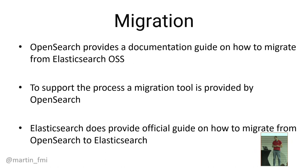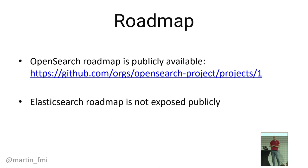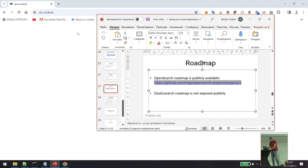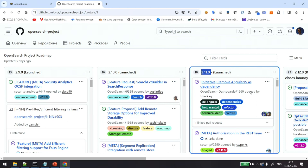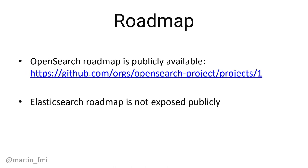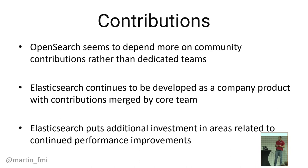In terms of roadmap, the Elasticsearch roadmap is not publicly available — they announce new features through blog posts and YouTube sessions. In OpenSearch, the roadmap is publicly available on GitHub, so you can see what is planned for upcoming versions like 2.10.0, 2.11, and so on. In terms of contributions, OpenSearch depends more on community contributions, although it's backed by teams at Amazon. Elasticsearch continues to be developed as a company product, with contributions merged only by the core team. Elasticsearch also puts additional investment into performance optimizations in specific areas.